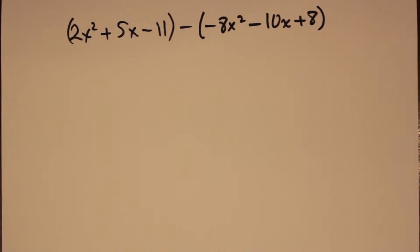For our last example, we're going to take 2x squared plus 5x minus 11, and subtract the polynomial negative 8x squared minus 10x plus 8.